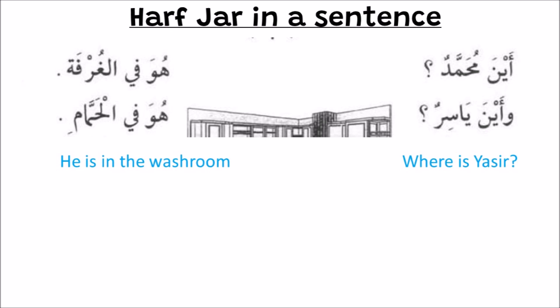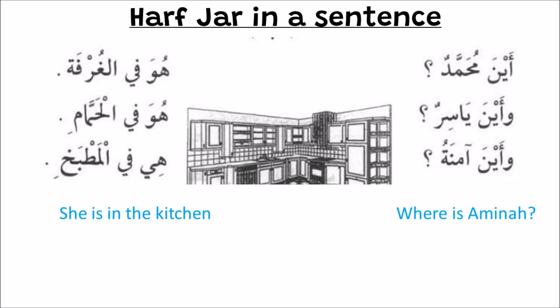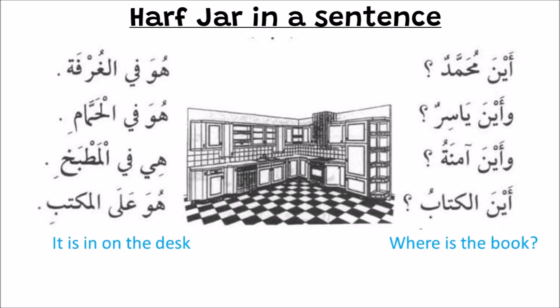Aina Yasirun? Where is Yasir? He is in the washroom. Aina Aminatu? Where is Amina? She is in the kitchen.